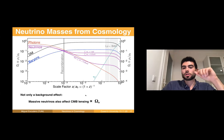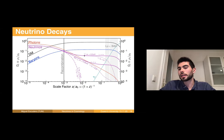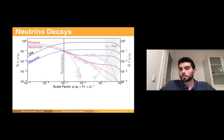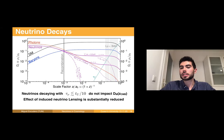If now neutrinos decay, they start to decay and their number density evolves as an exponential, so the energy density drops. This reduces the impact on the angular diameter distance to recombination, provided the lifetime is roughly smaller than the age of the universe divided by 10. The same effect applies to the neutrino lensing contribution. This is why unstable neutrinos on cosmological timescales can ameliorate the bounds on the sum of neutrino masses.